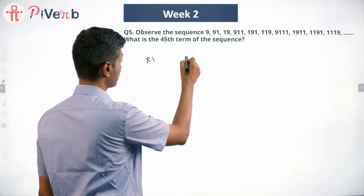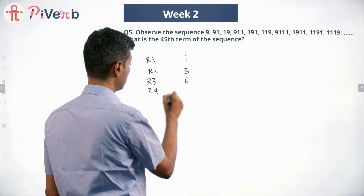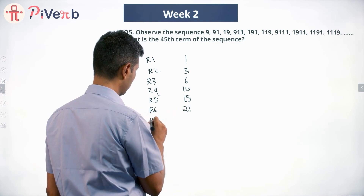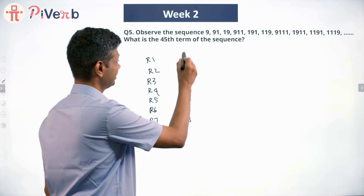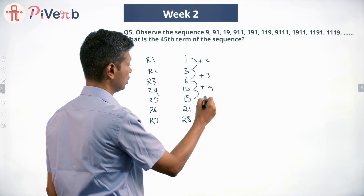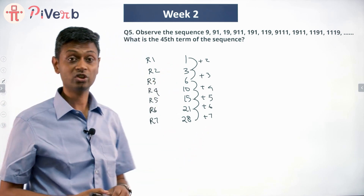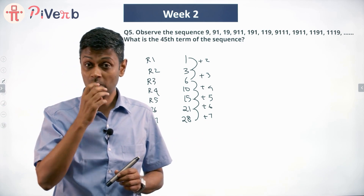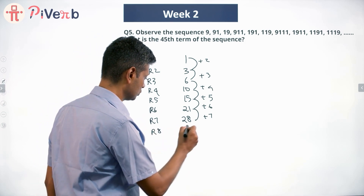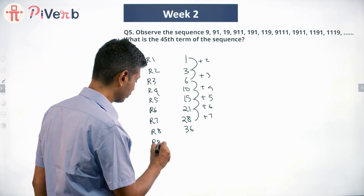End of row 1: 1. End of row 2: 3. End of row 3: 6. Row 4: 10. Row 5: 15. End of row 6: 21. End of row 7: 28. End of row 8: 36. End of row 9: 45. Row 9 ends with the 45th number. These cumulative totals — 1, 3, 6, 10, 15, 21, 28, 36, 45 — are called something special. I want you to find out what they are called.